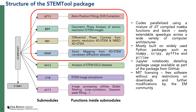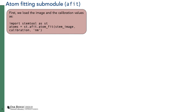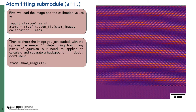In this talk, in the interest of time, I will only talk about four sub-modules: AFIT, GPA, DPC, and NBED. The first sub-module AFIT — its main core element is a class known as AtomFit. You fit the data as st.afit.AtomFit and it takes three positional arguments: the STEM image itself, the calibration value indicating the size of an individual pixel, and the unit of the pixel, for example nanometers. You can then check this image by calling the show_image function of the class, providing a positional argument for the Gaussian blur used to subtract the background.